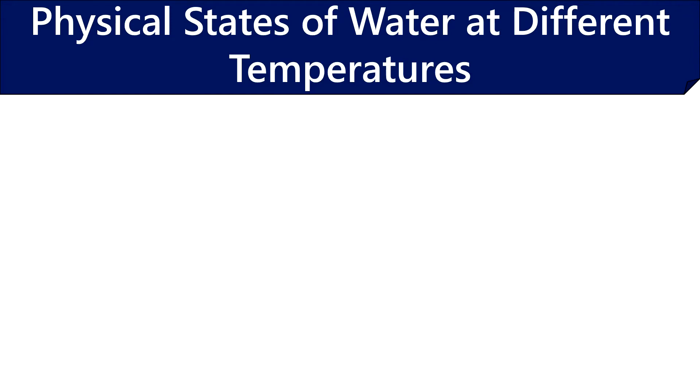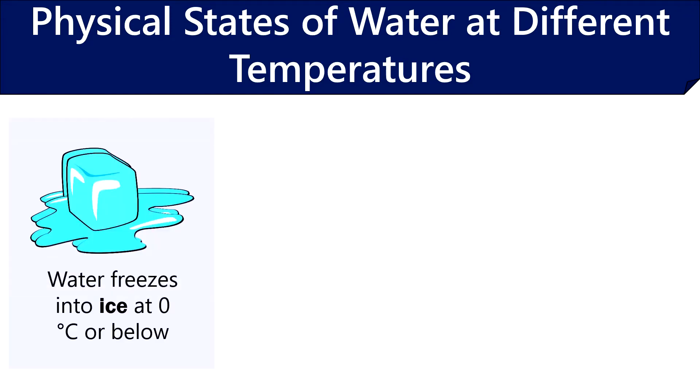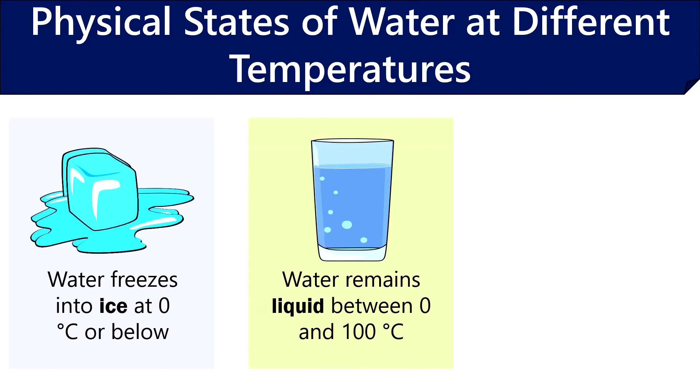Let us discuss the physical states of water at different temperatures. The freezing point of water is 0 degrees Celsius or 32 degrees Fahrenheit. Therefore, when the temperature of water falls to 0 degrees Celsius or below, water begins to freeze into ice. Or we can say the water transits from a liquid to a solid phase. At temperatures between 0 degrees Celsius and 100 degrees Celsius, water remains liquid.